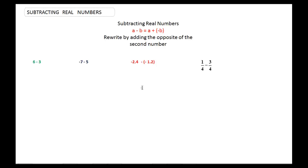This video will talk about subtracting real numbers. So let's subtract real numbers. Subtracting real numbers would be a minus b, but you could also write it as a plus a negative b. So you rewrite by adding the opposite of the second number.